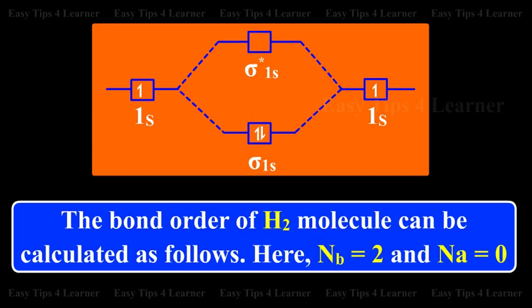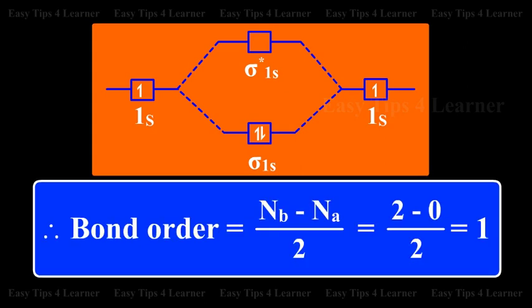The bond order of the hydrogen molecule can be calculated as follows. Here, Nb is equal to 2 and Na is equal to 0. Therefore, bond order is equal to Nb minus Na by 2, which equals 2 minus 0 by 2, that is equal to 1.